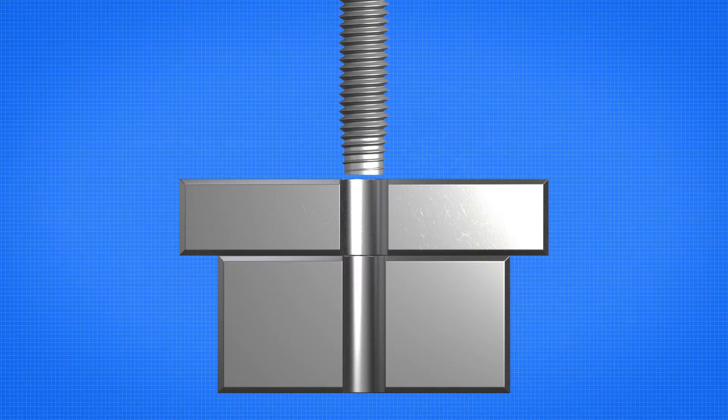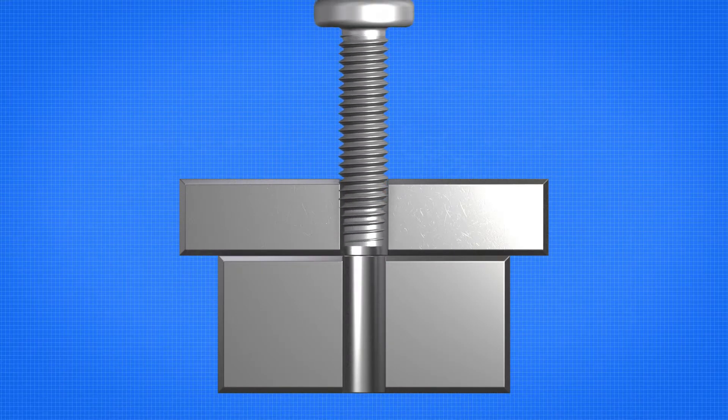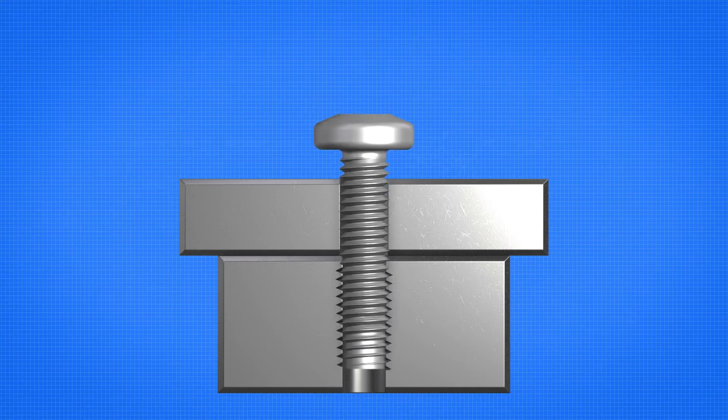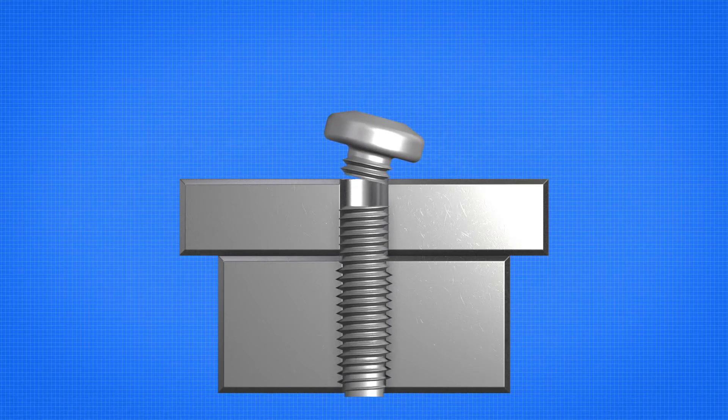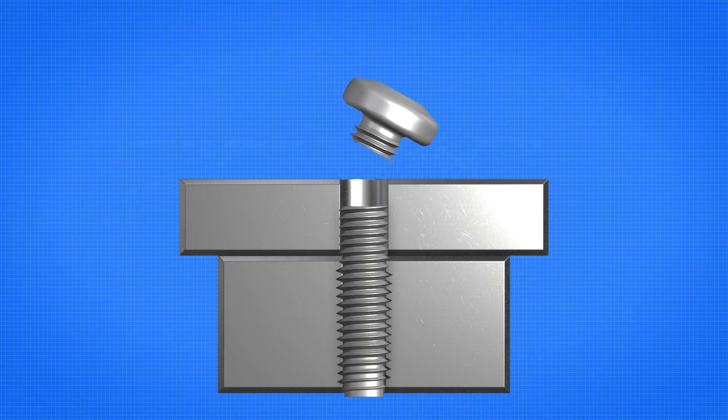Fastener fracture is the preferred failure mode in standard joints. If a Taptide Pro Fastener were inadvertently over-tightened, the mode of failure would be fastener fracture. The broken fastener could be easily removed, preserving the fastening site.